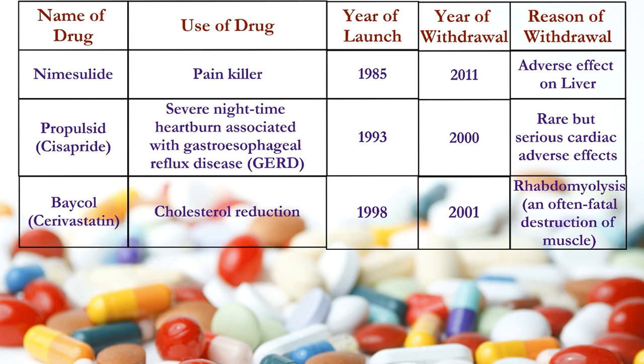According to the US FDA, a drug is taken off from the market when the harm caused by the medicine is greater than the benefits provided by that medicine. A medicine is normally removed from the market when safety issues cannot be corrected and it is a serious threat to public health.